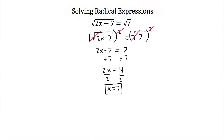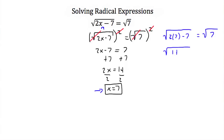We found our solution x = 7, but we squared both sides so we must check. Plugging in x = 7: the square root of 2 times 7 minus 7 should equal the square root of 7. 2 times 7 is 14, so this is the square root of 14 minus 7, which is the square root of 7. The square root of 7 equals the square root of 7, so x = 7 is a valid solution.